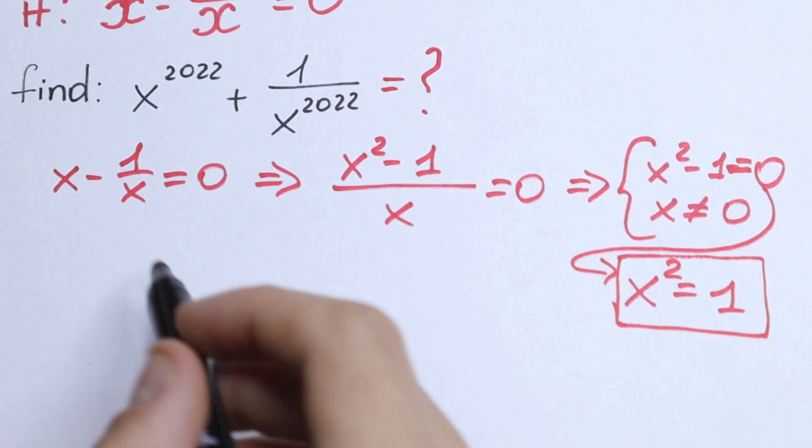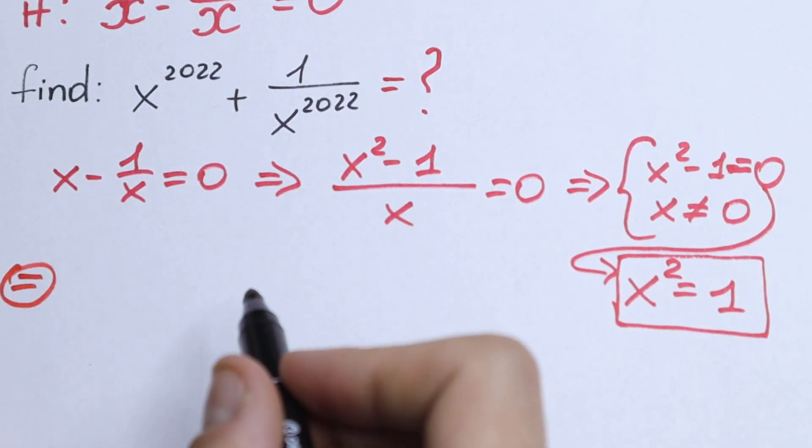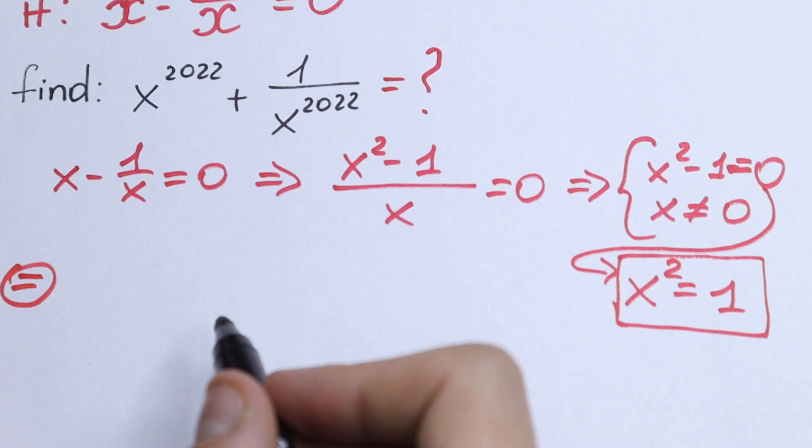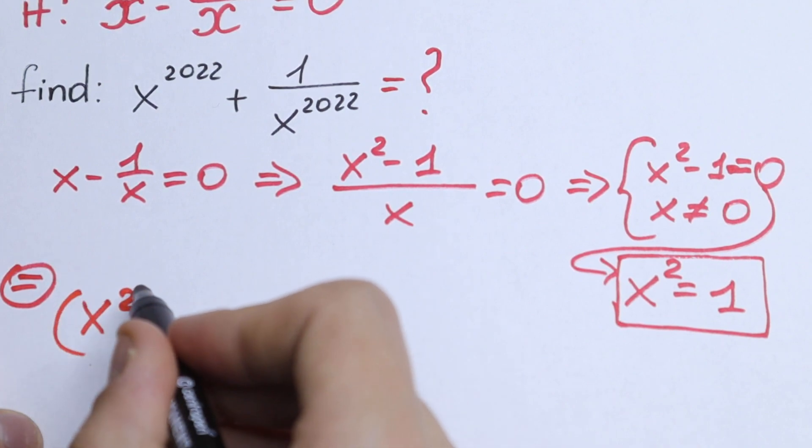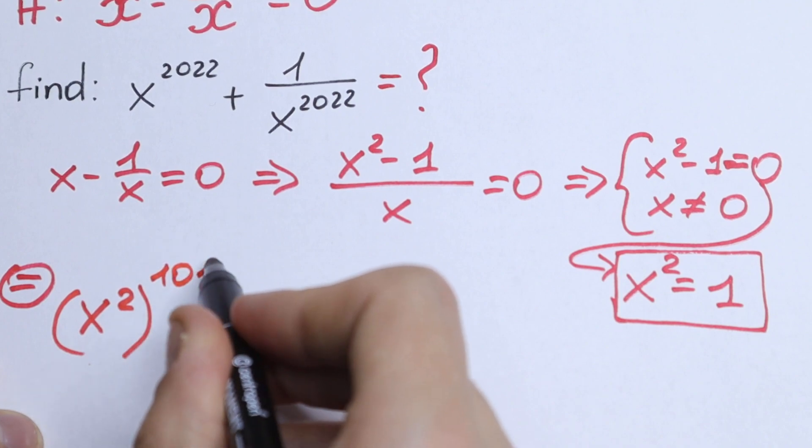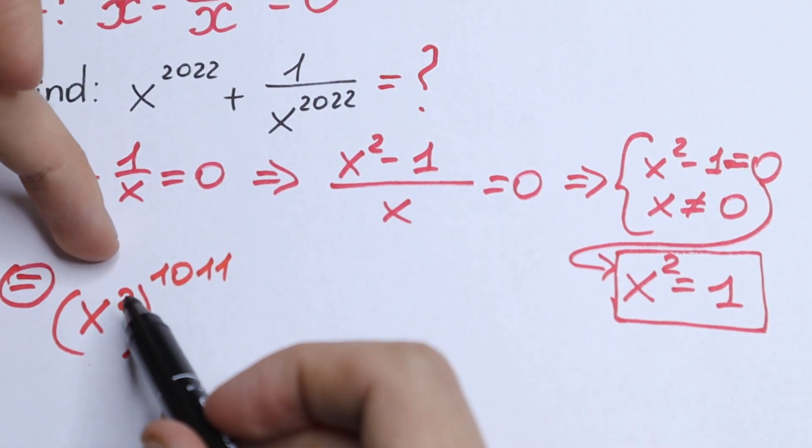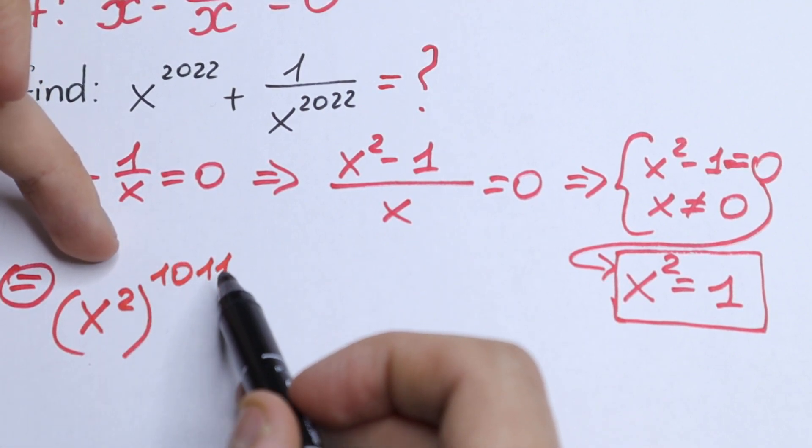How can we do this? Let's simplify this. What we'll have? Let's write this x to the power 2022 as x squared to the power 1011.